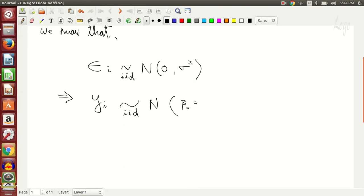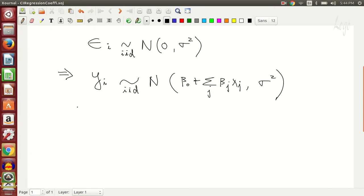From that it implies that the observed variable y, which also depends on the error term, is identically distributed and independent and has a mean term of beta zero plus beta j x j summation and a variance term of sigma square.